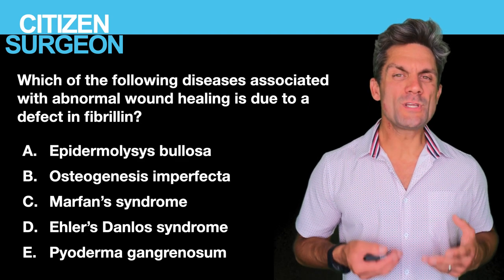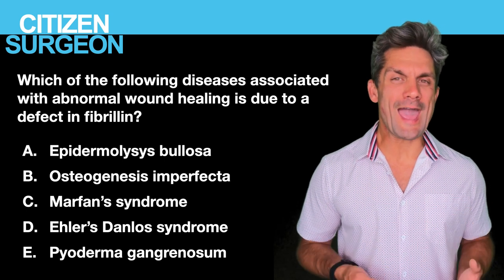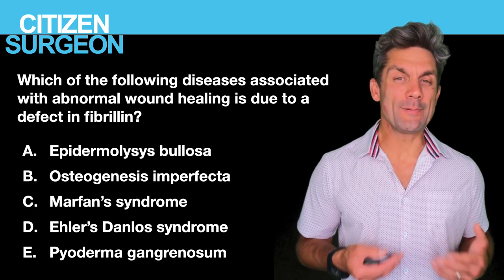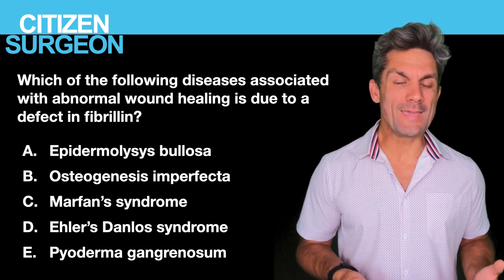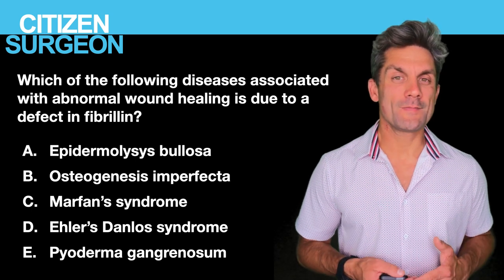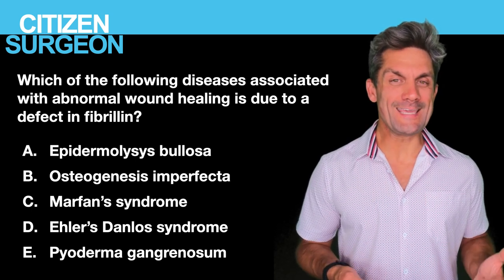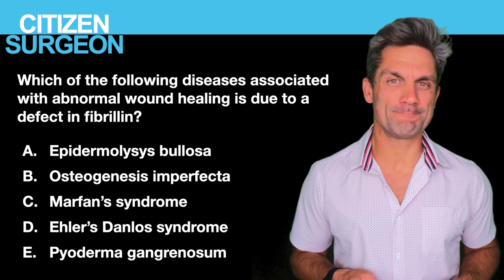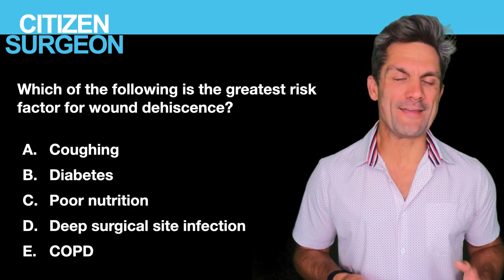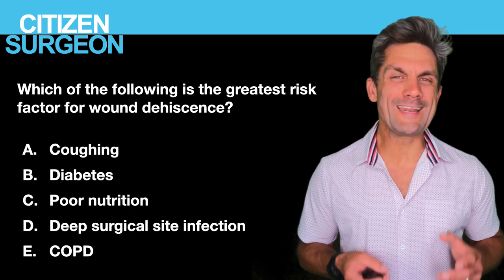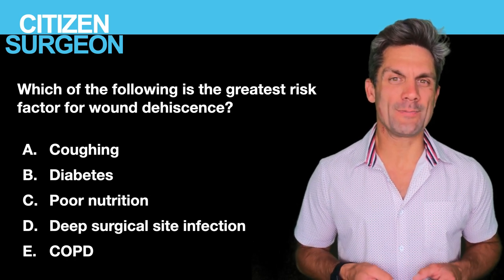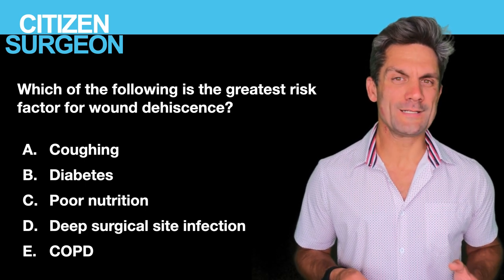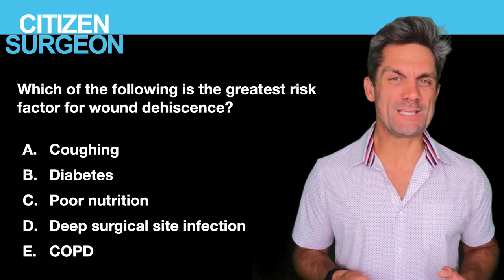Question six: which of the following diseases associated with abnormal wound healing is due to a defect in fibrillin? Is it A, epidermolysis bullosa; B, osteogenesis imperfecta; C, Marfan syndrome; D, Ehlers-Danlos syndrome; or E, pyoderma gangrenosum? Question seven, one of my favorites: what is the greatest risk factor for postoperative wound dehiscence? Is it coughing, diabetes, poor nutrition, deep surgical site infection, or COPD?